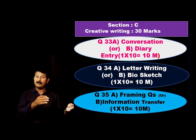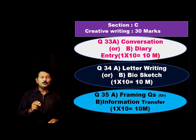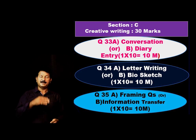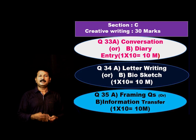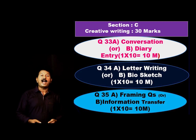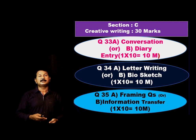Question number 34: you will get either a letter writing or a biography. The best option for all students is biography. There are five areas to cover: personal details, education background, services, achievements, and if the person has died, mention the date — otherwise, say how you were influenced by that person. You can add a quote related to that person. If you choose these areas well, you can score 9 or 10 marks.